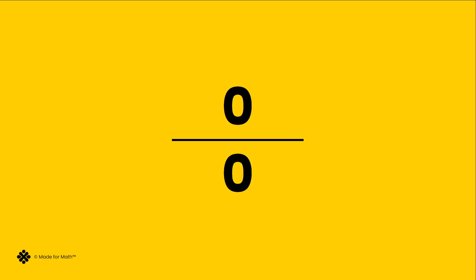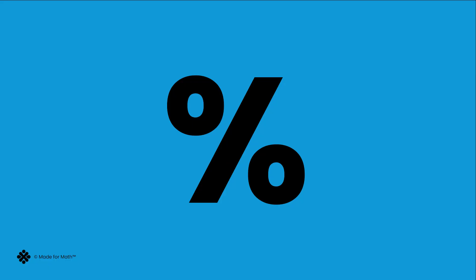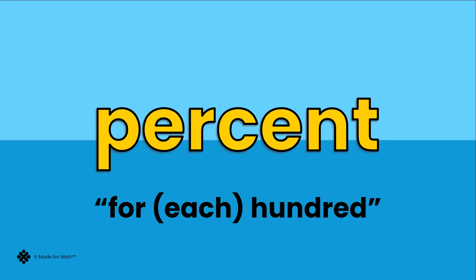In the 17th century, percent was written like this — a zero over zero. Over time, it evolved into this symbol. The two zeros are a good reminder that this is a ratio with a 100 in the denominator.